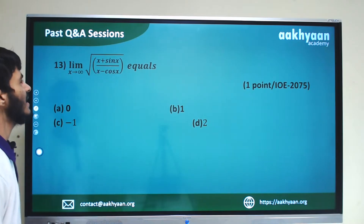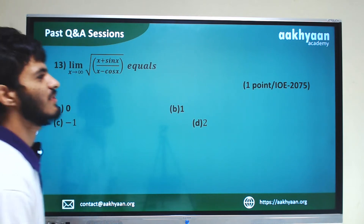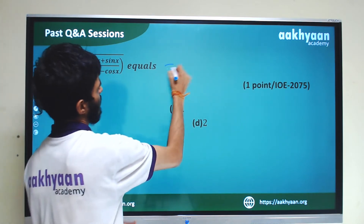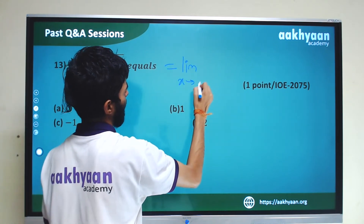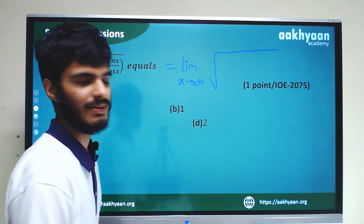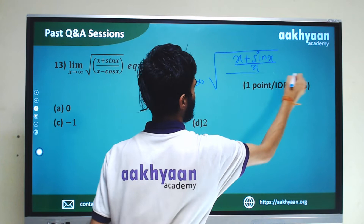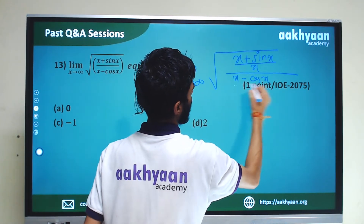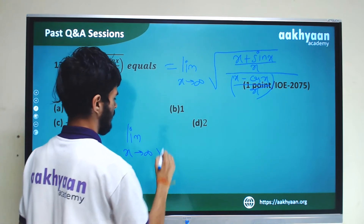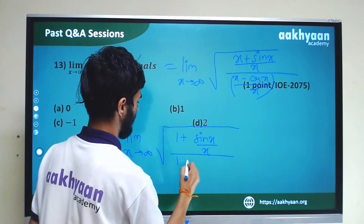Let's start. We are given: limit x tends to infinite, root x plus sin x by x minus cos x. We will divide numerator and denominator by x: limit x tends to infinite, root under 1 plus sin x by x, divided by 1 minus cos x by x.